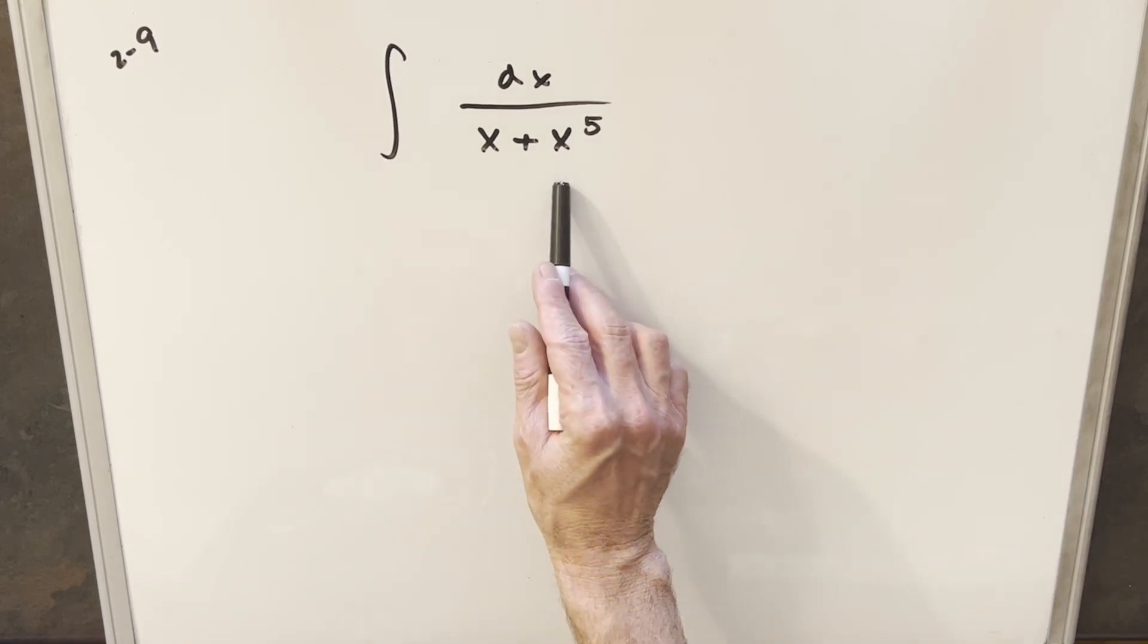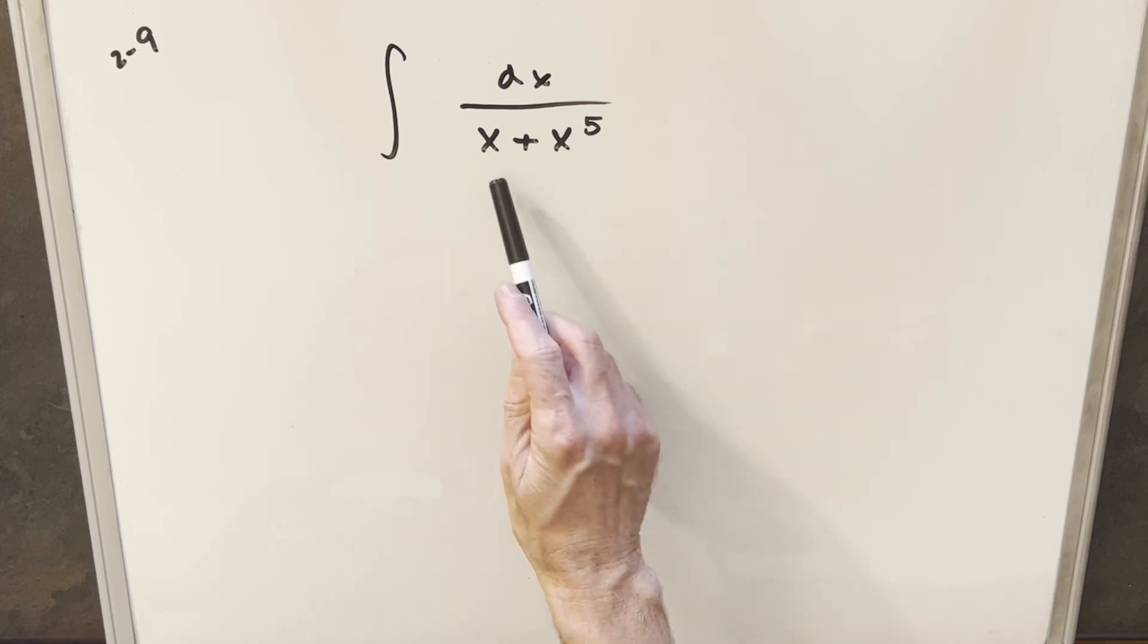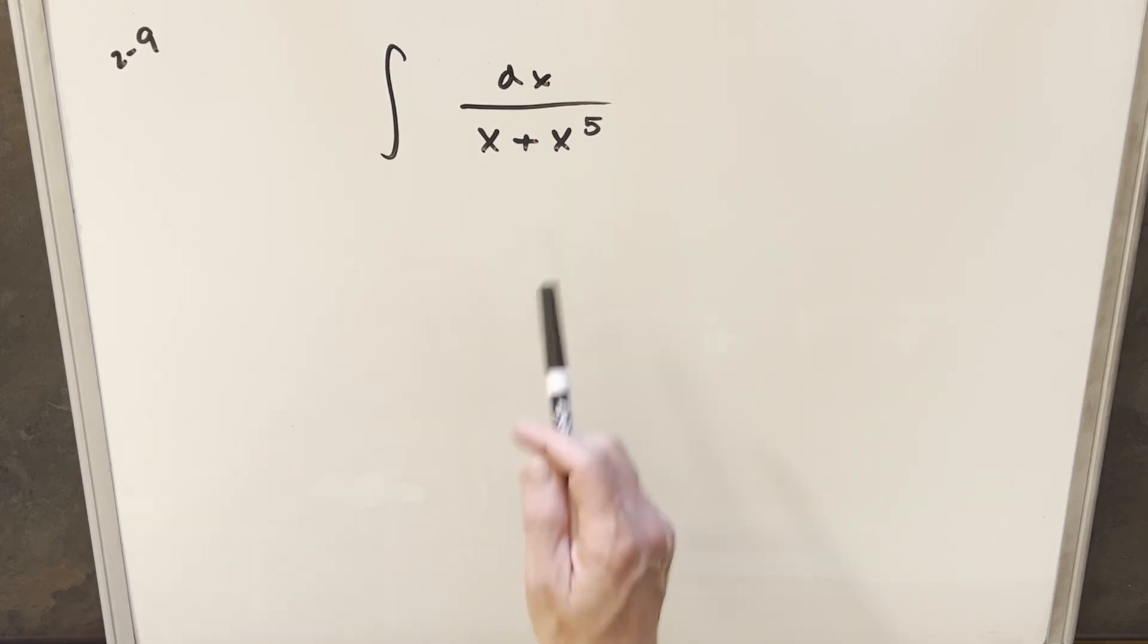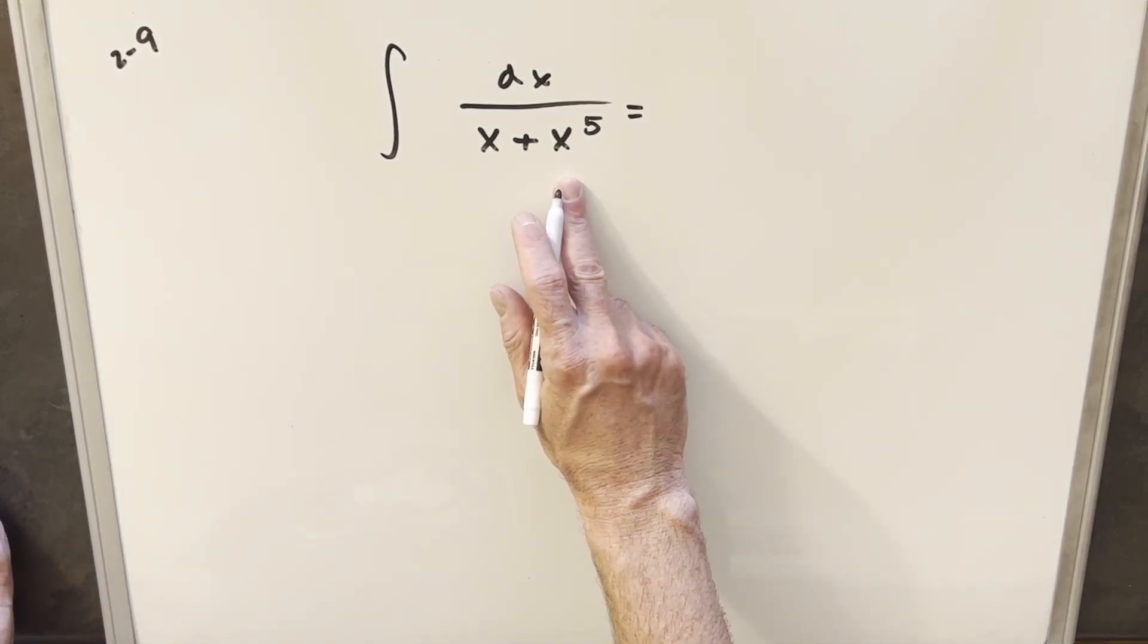What I'm going to do is a u substitution. I also want to factor something out from this denominator in order to make it happen. Now we could factor an x out, but I think what's going to work better is if I actually factor the x to the fifth out.